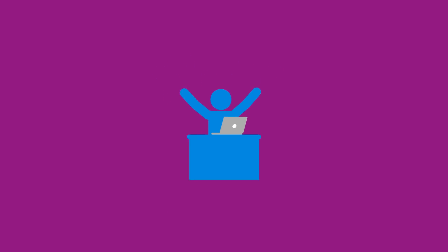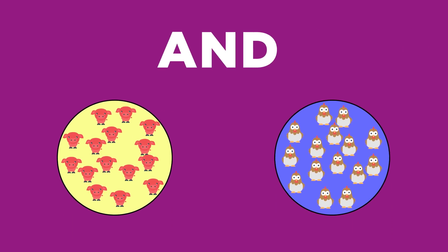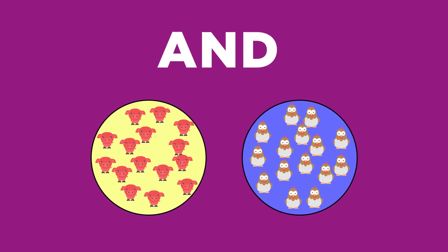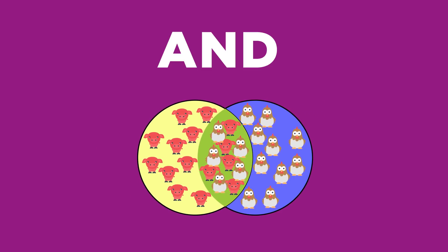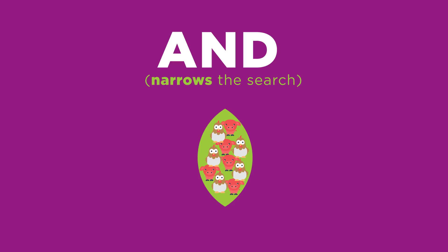In a previous video you learned how to use the three boolean operators: AND, OR, and NOT. Let's review. Using AND between two keywords tells the computer that both keywords must be present to be included in the search results. AND narrows the search.